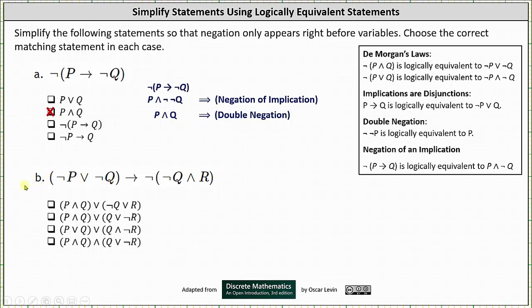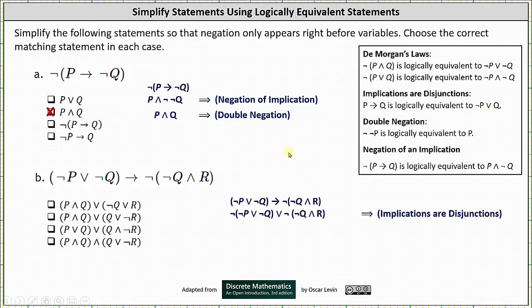For part b, we have the implication 'if not p or not q then the negation of not q and r.' Let's first write the implication as a disjunction. Looking at our notes again, 'if p then q' is logically equivalent to 'not p or q.' This indicates the given implication is logically equivalent to the negation of 'not p or not q' or the negation of 'not q and r.'